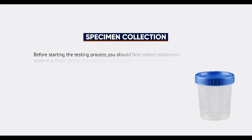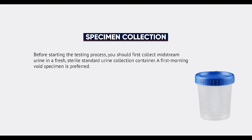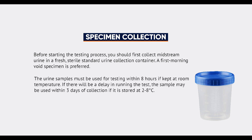Before starting the testing process, collect midstream urine in a fresh, sterile, standard urine collection container. A first morning void specimen is preferred. The urine samples must be used for testing within 8 hours if kept at room temperature. If there will be a delay in running the test, the sample may be used within 3 days of collection if stored at between 2 and 8 degrees Celsius.